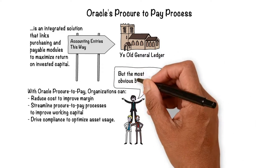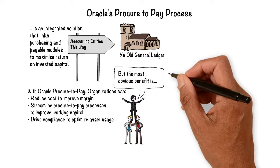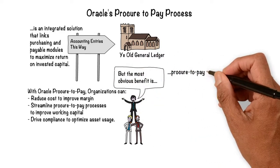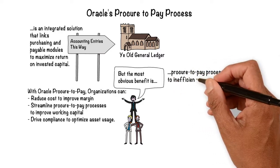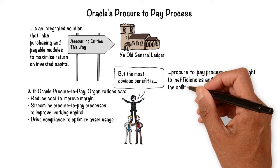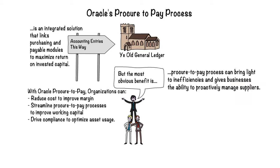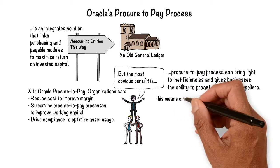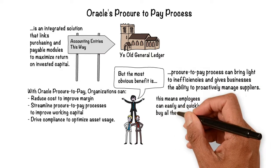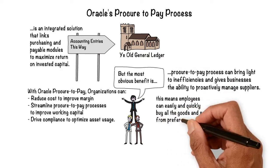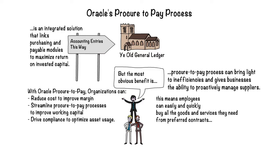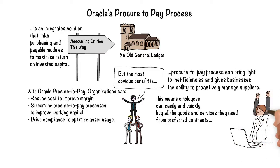The most obvious benefit is that a Procure2Pay process can bring light to inefficiencies and gives businesses the ability to proactively manage suppliers. For organizations, this means employees can easily and quickly buy all the goods and services needed from preferred contracts, ensures they stay within budget, and work with required approvals.